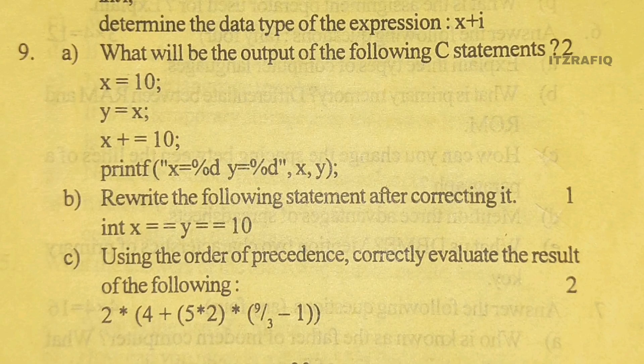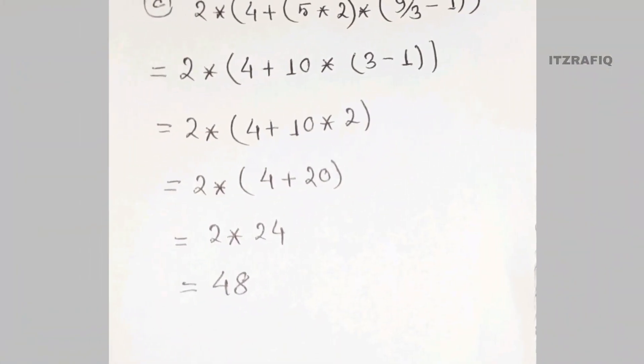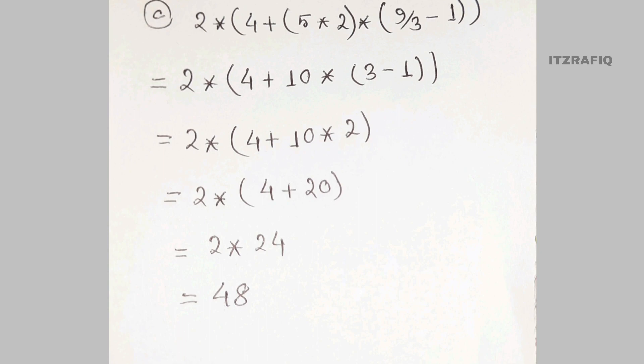To evaluate this, first solve the inside bracket, then solve the bracket part, then multiply, then add. Simplify step by step: 2 times (4 + (5 times 2) times (9/3 - 1)) equals 2 times (4 + 10 times (2 - 1)) equals 2 times (4 + 10 times 2) equals 2 times (4 + 20) equals 2 times 24 equals 48.